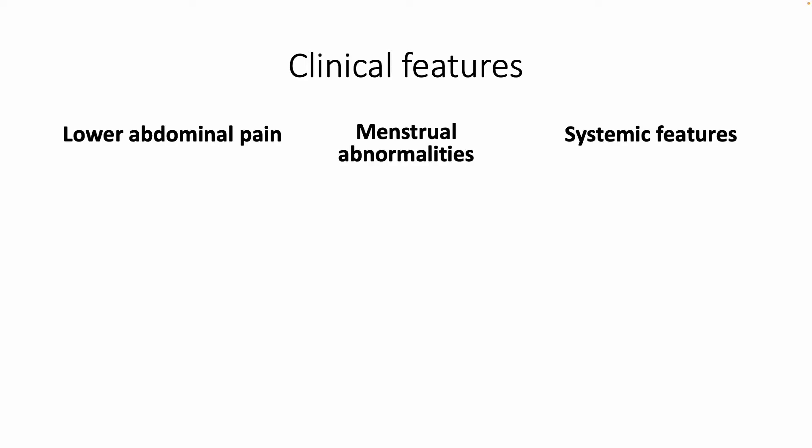Next, I would like to give you a brief overview of the clinical features. Patients complain of three main groups: abdominal pain, menstrual abnormalities, and systemic features.